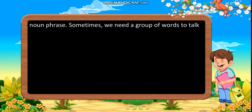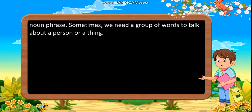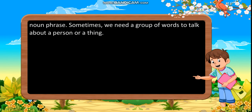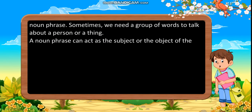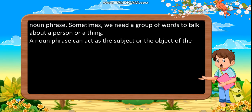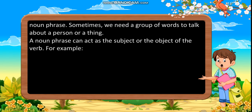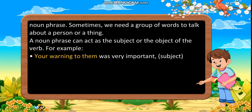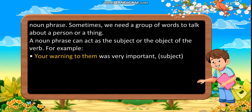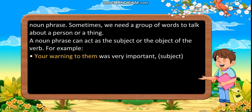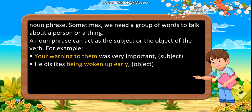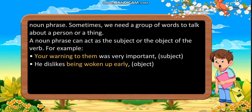Sometimes we need a group of words to talk about a person or a thing. A noun phrase can act as the subject or the object of the verb. For example: 'Your warning to them was very important' — here the noun phrase is the subject. 'He dislikes being woken up early' — here the noun phrase is the object.